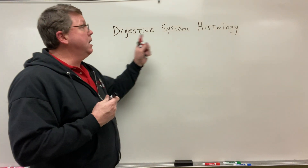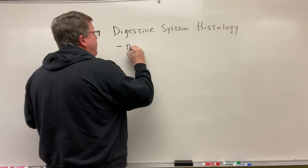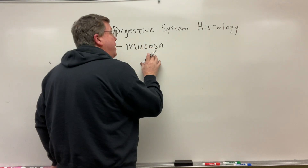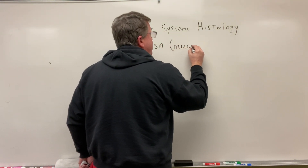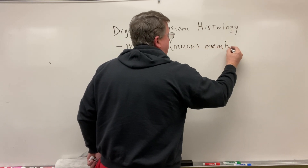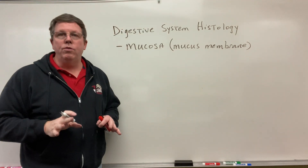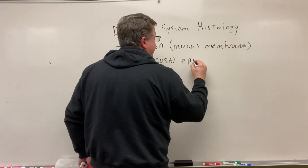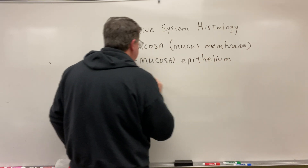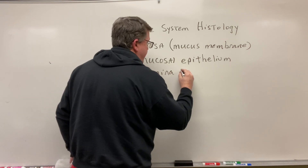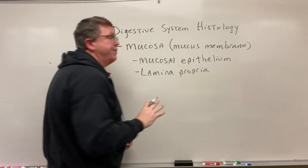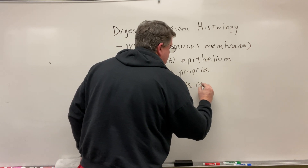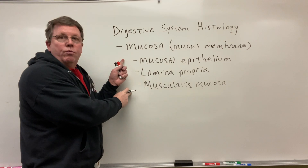There are actually going to be a few different levels to this. The first layer is going to be what we call the mucosa, and that's what I'm going to be covering in this video. I'll make other videos on the other layers. The mucosa is better known as the mucous membrane. There are going to be three layers to the mucosa: the mucosal epithelium, the lamina propria, and the muscularis mucosa.